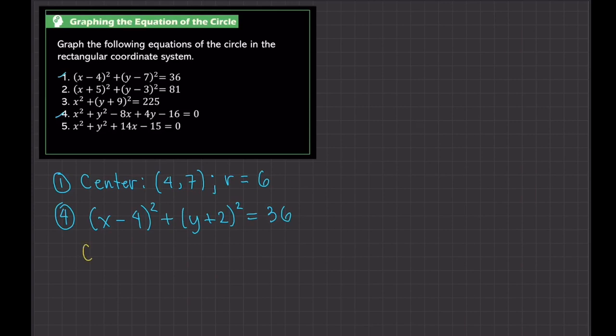And so therefore, the center for number 4 is (4,-2), and the radius is again 6. So let's graph these two circles.